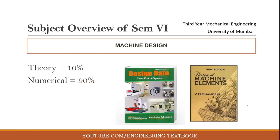Our first subject is Machine Design. Machine Design consists of 10 percent theory and 90 percent numerical. For studying this subject, you need two books: first is the Design Data Book, and second is Design of Machine Elements by V.B. Bhandari. These two books are compulsory for Machine Design this semester.